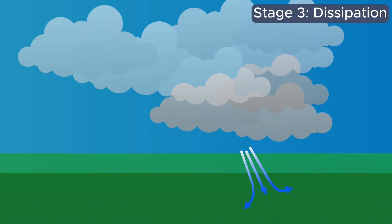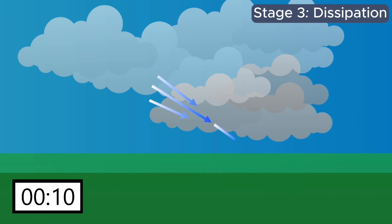Stage three is dissipation. Once a microburst has reached the ground, it rarely lasts longer than about 15 minutes. When it reaches the ground, it begins to dissipate.